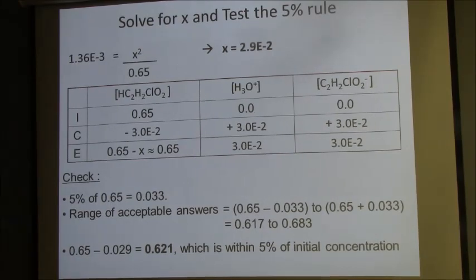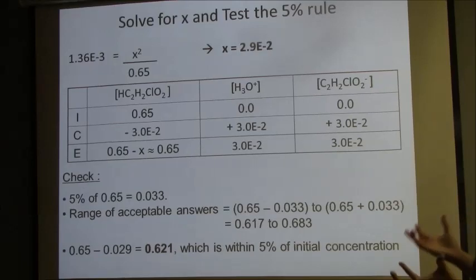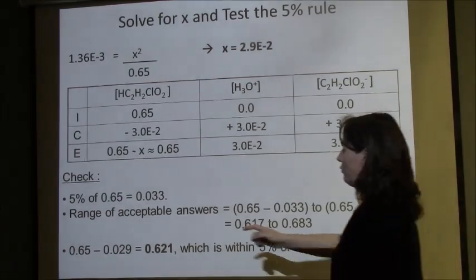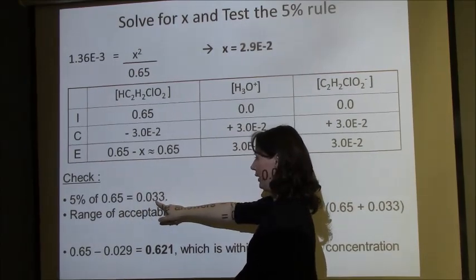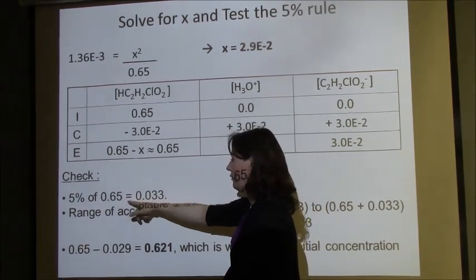Now, we just need to ask ourselves: does the 5% approximation work, or were we incorrect to assume this? Here's what you need to do. You just need to ask yourself, what's the range of acceptable answers? 5% of 0.65 is 0.033. 5% times 0.65, that's what I get.